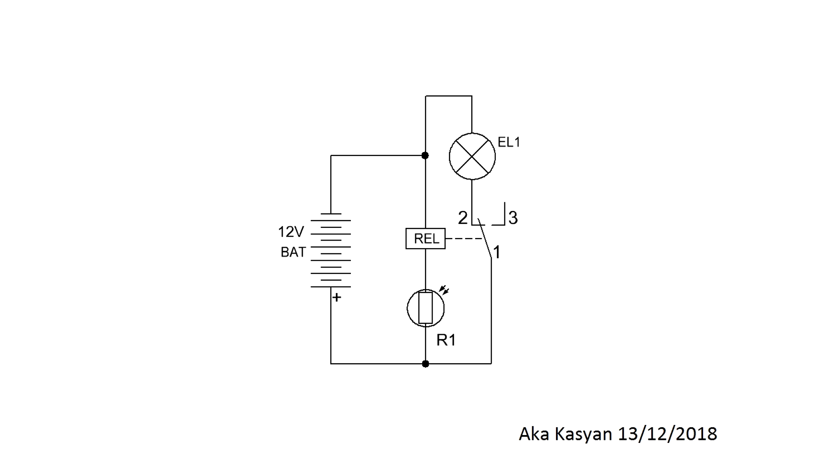In daylight, the resistance of the photoresistor is minimal. The relay is activated and contacts 1 and 2 are open. The load, for example a lamp, is off.